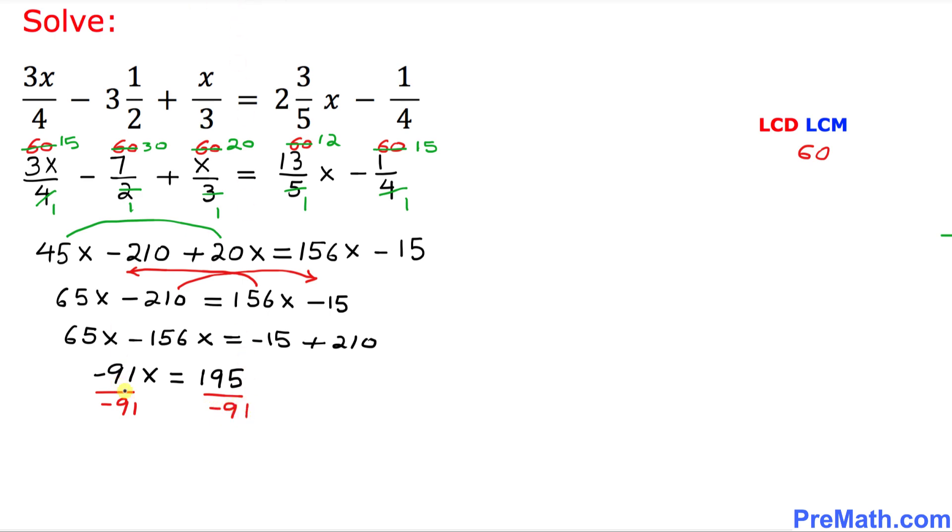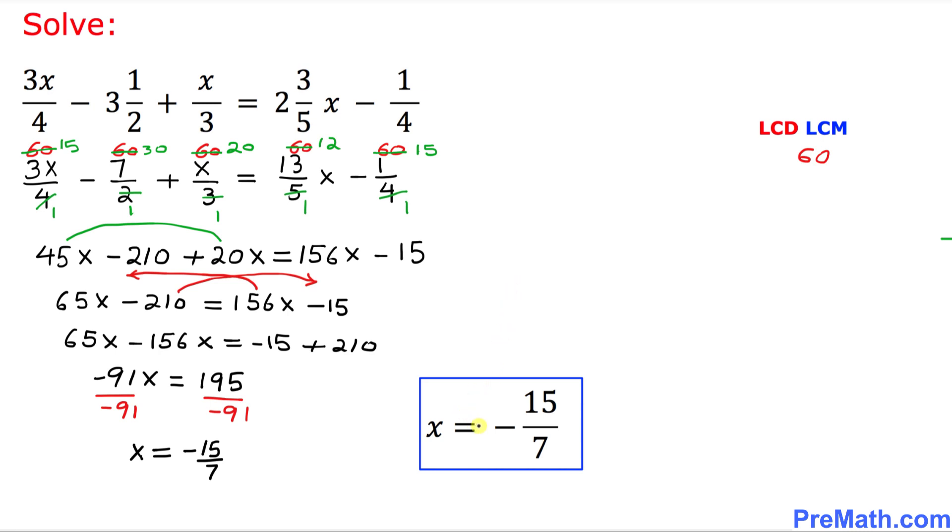So this simply becomes x equals, and here we can reduce this one. The reduced form is going to be negative 15 over 7. So thus our solution turns out to be x equals negative 15 over 7, and that is our answer.